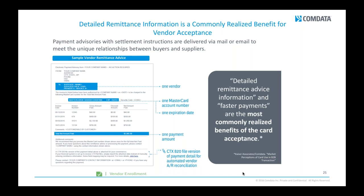All of our remittances are customized with your information — this really is your program. CommData more so than anything else is simply the vehicle by which you are delivering these payments. This will also detail out the remaining credit card information necessary to process that payment, and no two remittances that any of your vendors receive are going to look alike — all those numbers are going to be different every single time, obviously for security, and to adhere to federal regulations to remain PCI compliant.